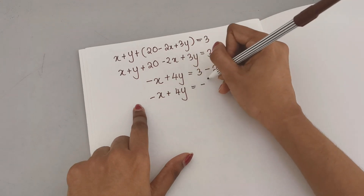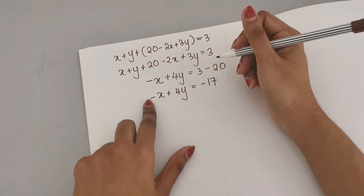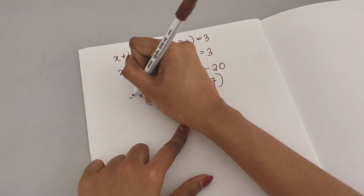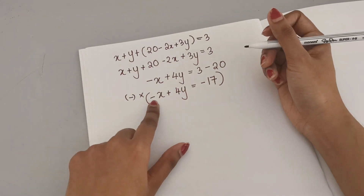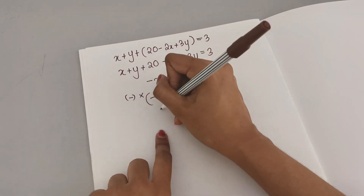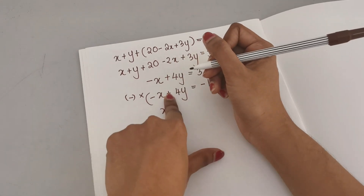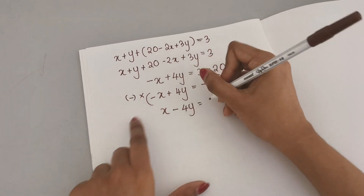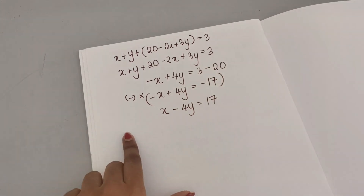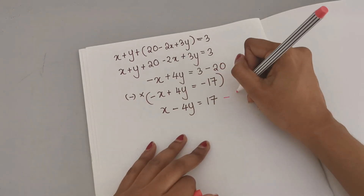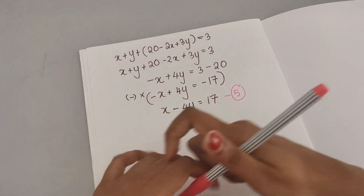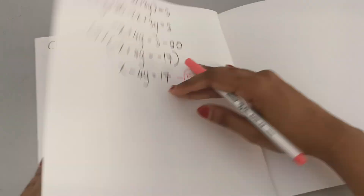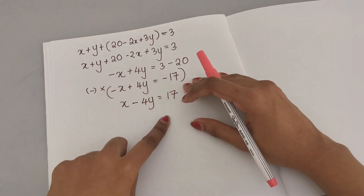Multiplying through by negative 1 to make x positive: x minus 4y equals 17. This becomes equation 5. Now equation 4 and equation 5 both have x and y only, so we solve this simultaneous pair.